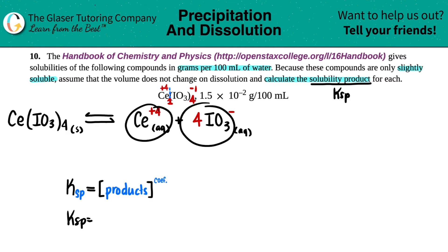KSP equals the concentration of the two products. So we have the concentration of Ce plus four times the concentration of IO3. But with KSPs, just be careful. Some of them are going to have coefficients which we have to raise them to. The Ce, there was nothing here. But for the iodate, there was a four in front. So I have to raise this to the fourth.